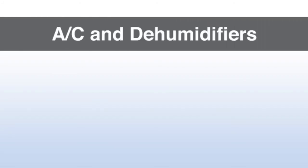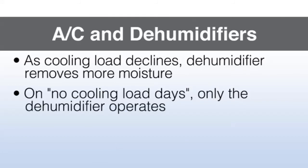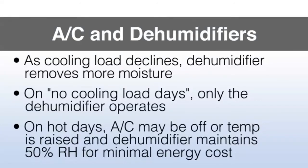AC and dehumidifier interaction is important at this stage. As the cooling load declines, the dehumidifier removes more and more moisture. On no-cooling-load days, the dehumidifier only operates. On hot days when the home is unoccupied, the AC may be turned off or the temperature raised. The dehumidifier maintains 50% relative humidity for minimal energy consumption, regardless of what the temperature in the home is. Thank you.